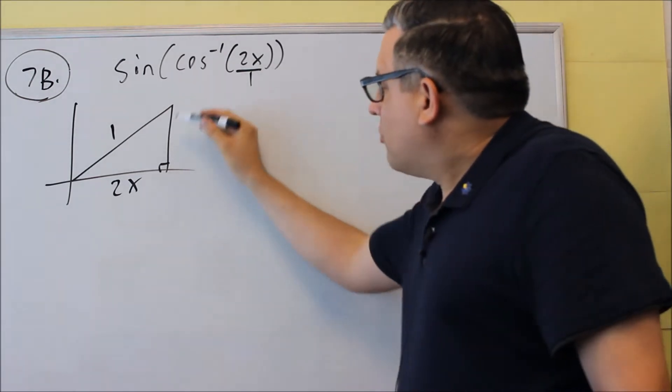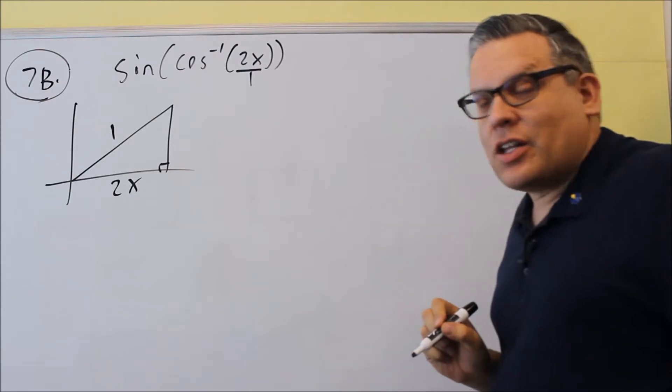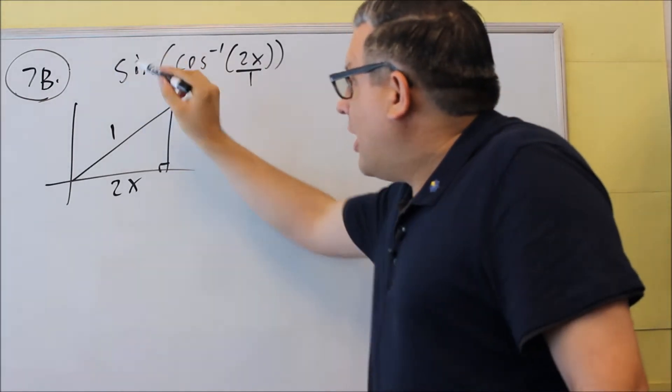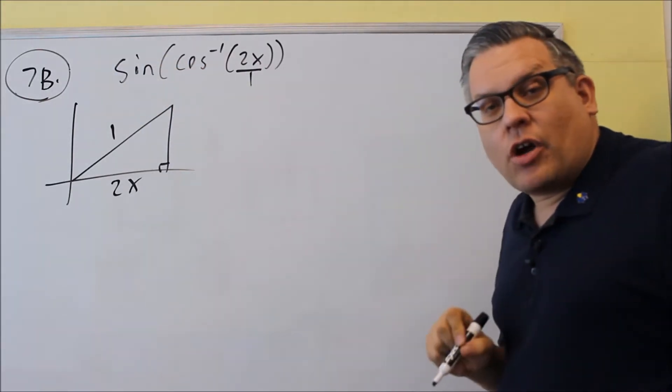We have to use Pythagorean theorem to figure out the missing side, and then finally we can write the definition for sine, and that will be our answer.